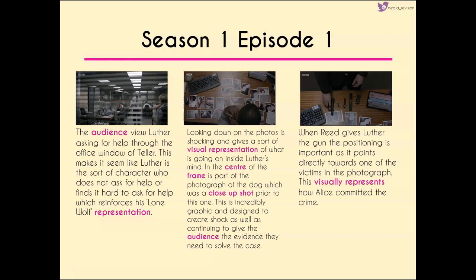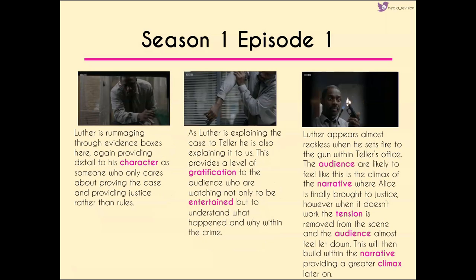When Reed gives Luther the gun in the third shot, the positioning is important because the gun is pointing directly towards all the victims in the photograph — giving a visual representation of how Alice committed the crime. When we see Luther rummaging through the boxes, what he's actually rummaging through are evidence bags, providing detail to his character as someone who only cares about proving justice rather than following the rules.